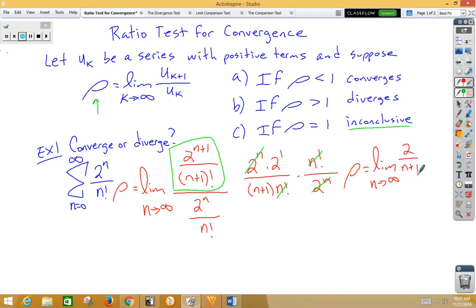Well, that's a low high, and a low high is always 0. And 0 is less than 1. Well, if we take a look at our rules, when rho is less than 1, this series converges.